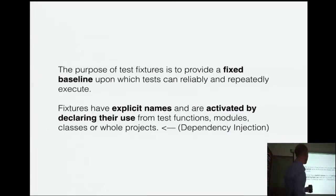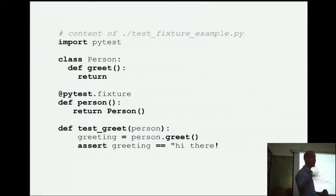And here's what PyTest has to say about fixtures. The purpose of fixtures is run a fixed baseline upon which tests can reliably and repeatedly execute. That doesn't seem like the best way to sell them to me. But, they also say fixtures have explicit names that are activated by declaring their use from test functions, modules, classes, or whole projects. This sentence here about, you know, activated by declaring their use, that's dependency injection. If you don't know what that is, this will make sense in a minute. If you use Angular, you already get this.